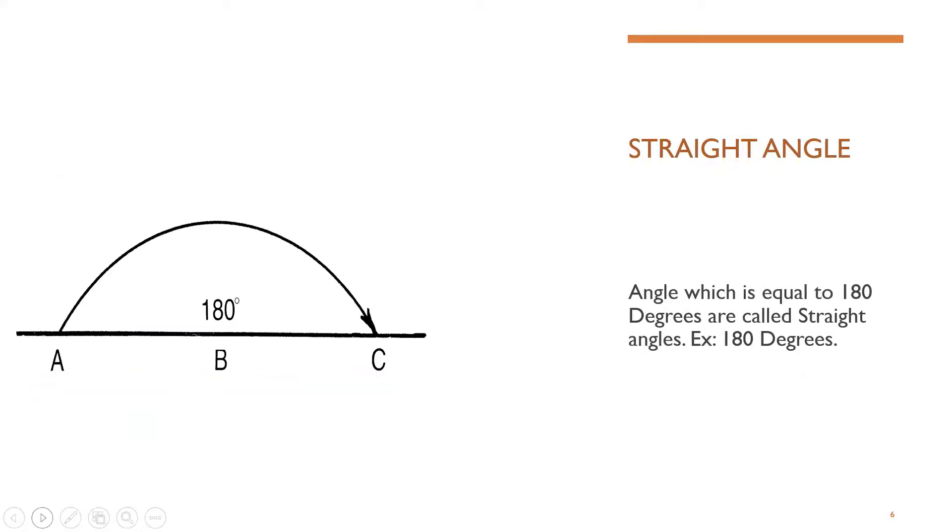Straight angle. An angle which is equal to 180 degrees is called as straight angle. Example 180 degrees. In straight angle, there is only one example which is 180 degrees.